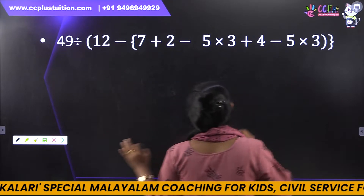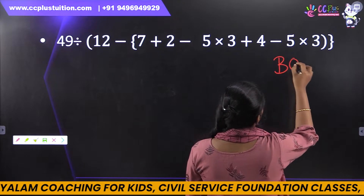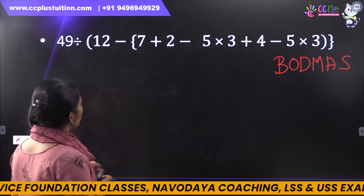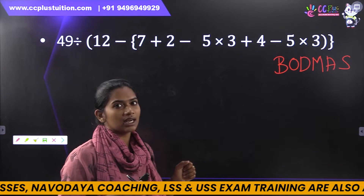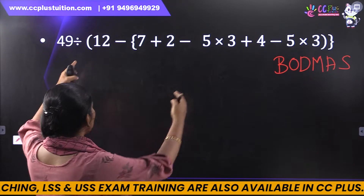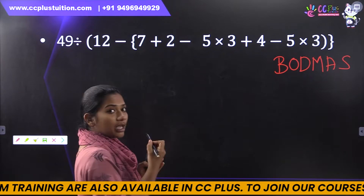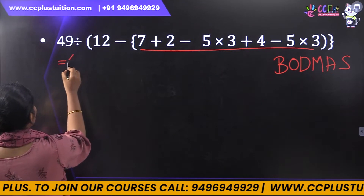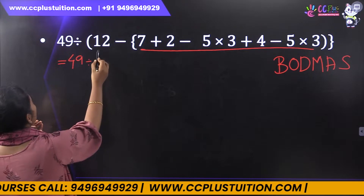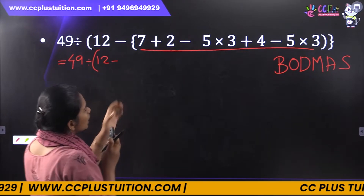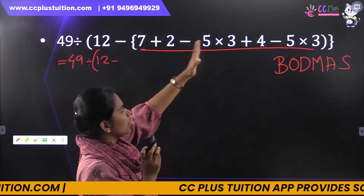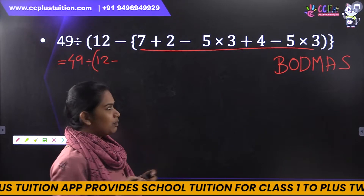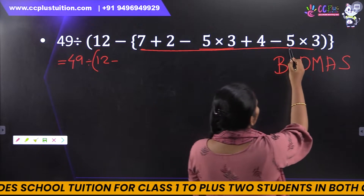What is the BODMAS rule? When we apply the BODMAS rule, we add one step at a time. Now we can write about the BODMAS rule and solve this. Look here: 49 divided by bracket open 12 minus — look at this bracket — addition, subtraction, multiplication. The last one is 5 into 3. E5 into 3 is the last one.